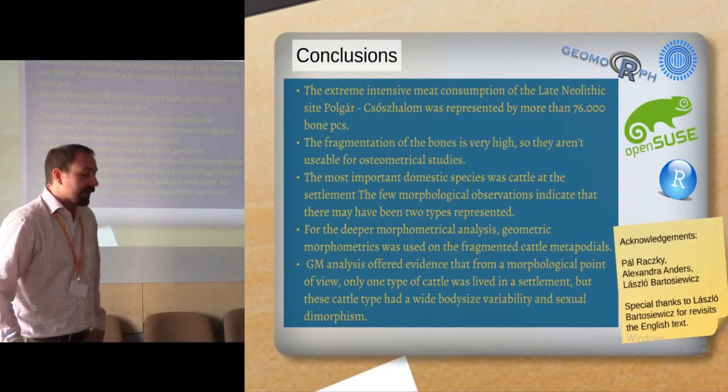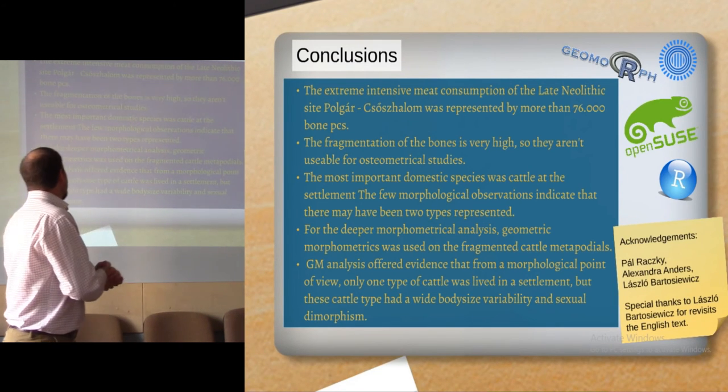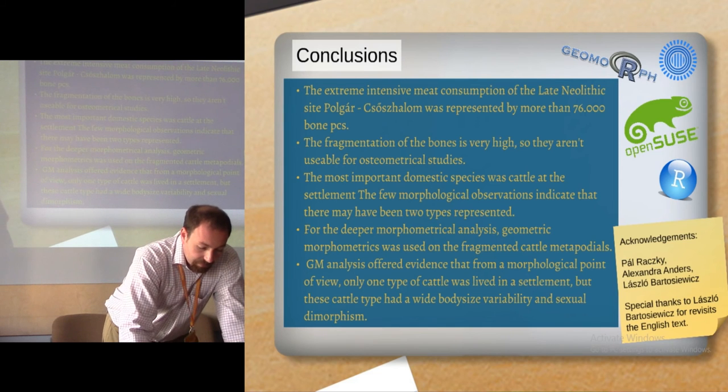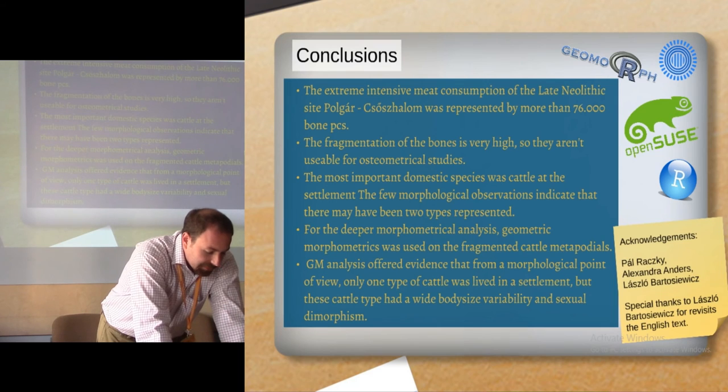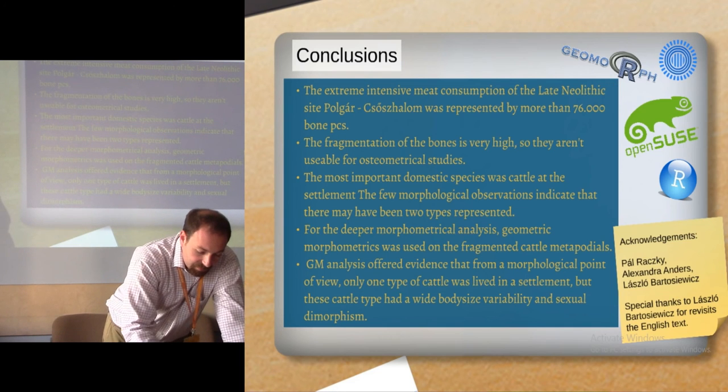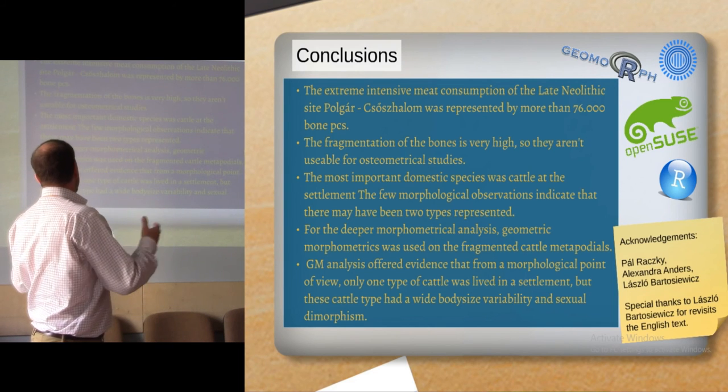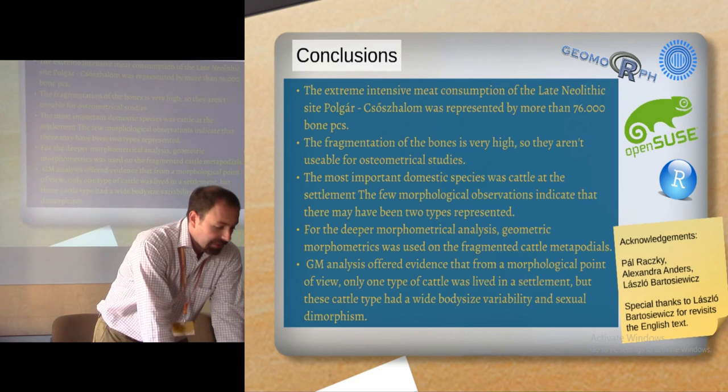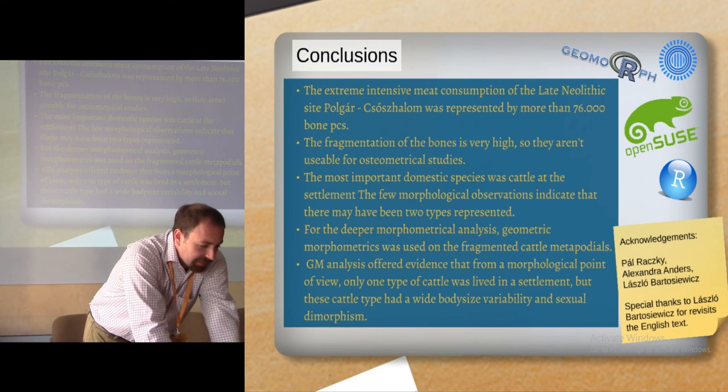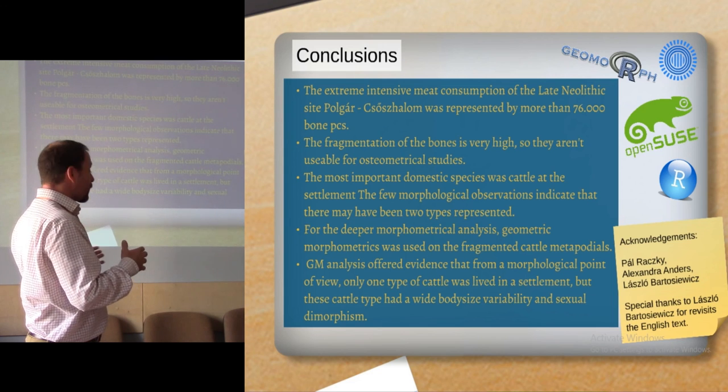And finally, we can conclude that we have an extremely huge amount of animal bone material from this site, but the fragmentation is very extreme and very high. The identification and the osteometrical studies, making the osteometrical studies is very difficult process. The most important species was the cattle at the settlement. For the deeper morphological analysis, the GM analysis offered evidence that from a morphological point of view, only one type of cattle was living in the settlement, but this cattle type had wide body size variability and a wide sexual and ontogenetic variability.